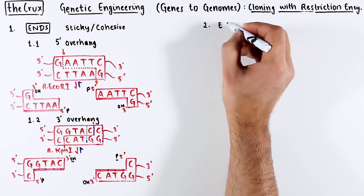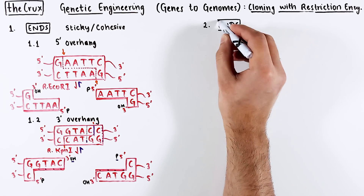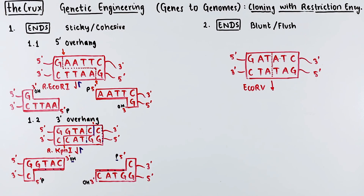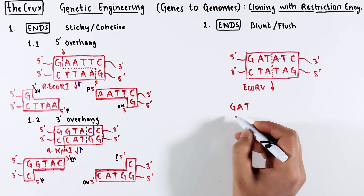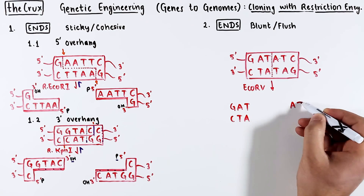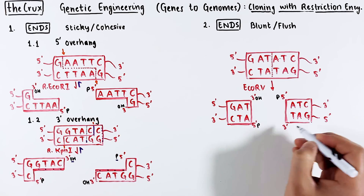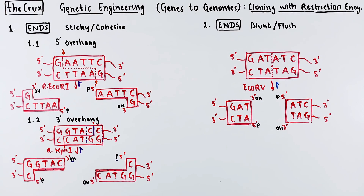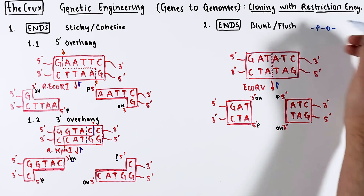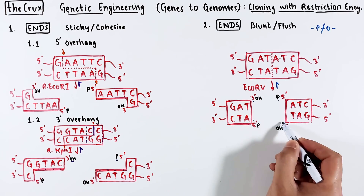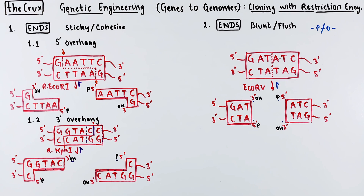The second type of ends are blunt or flush ends. Here's an example, which is recognized by EcoR5. Instead of L-shapes, you get flat shapes. With ligase, you can reverse these cuts as well. Blunt cuts nicely illustrate that breaks are purely a phosphodiester break, because in this case there is no base pairing to think about.